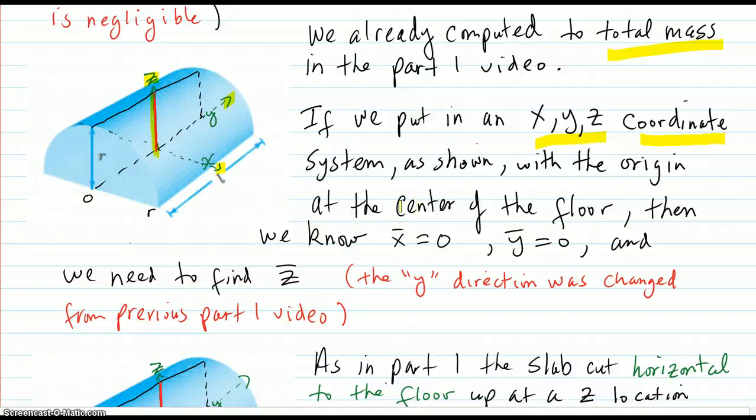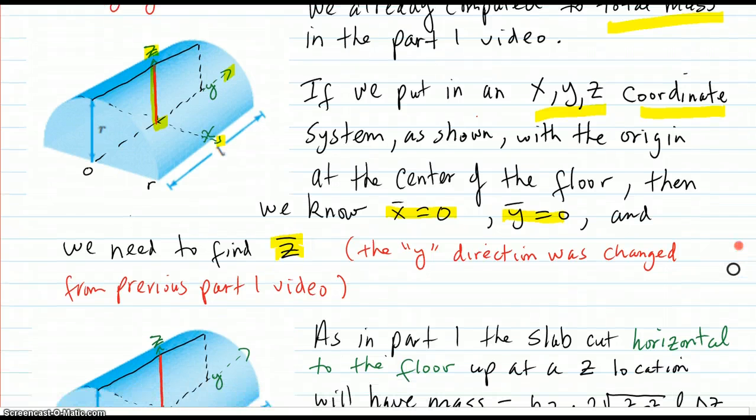So in that coordinate system, where the origin is 0,0 down here on the ground, on the floor, you already know that the center of mass X coordinate is 0, the center of mass Y coordinate is 0, and all we need to define is the Z coordinate of the center of mass.